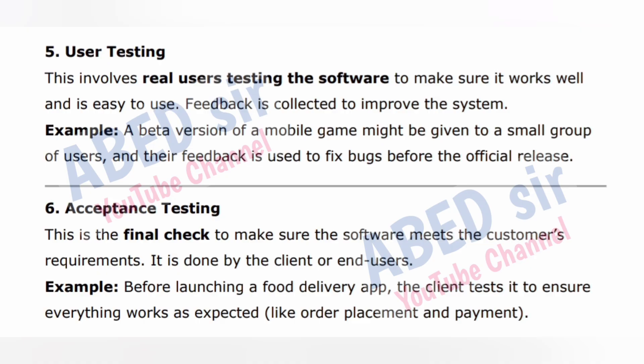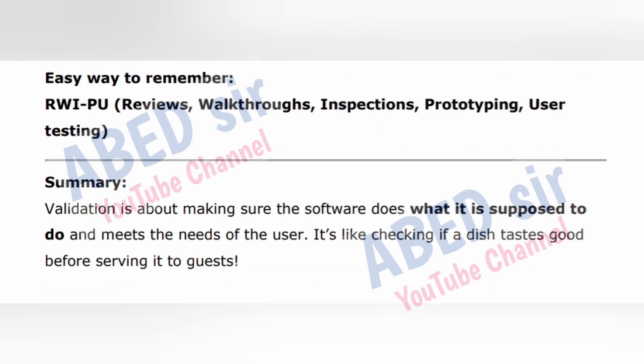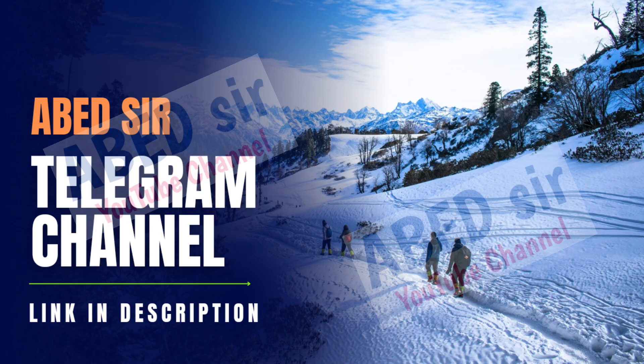Technique 6 — Acceptance Testing: this is the final check to make sure the software meets the customer's requirements. It is done by the client or end users. Example: before launching a food delivery app, the client tests it to ensure everything works as expected, like order placement and payment. Easy way to remember: RWIPU — Reviews, Walkthroughs, Inspections, Prototyping, User Testing. Summary: validation is about making sure the software does what it is supposed to do and meets the needs of the user. It's like checking if a dish tastes good before serving it to guests.